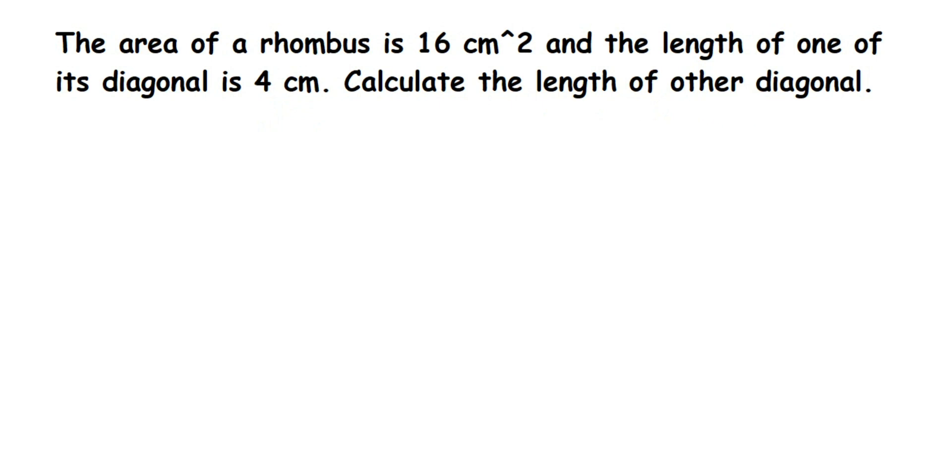So what is given in the question? They have given the area of rhombus, which is already calculated as 16 centimeter square, and they have given one of the diagonal length which is 4 centimeter. We have to find out the length of the other diagonal.